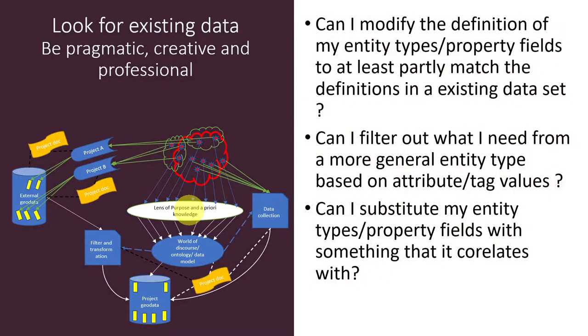I've organized this into some sub-questions. First of all, you must ask yourself: could I modify the way that I define my entity types or property fields so they at least partly match some definitions in existing data? So if you define an urban green space in one way and there is another research project or dataset that has defined an urban green space in an almost similar way...